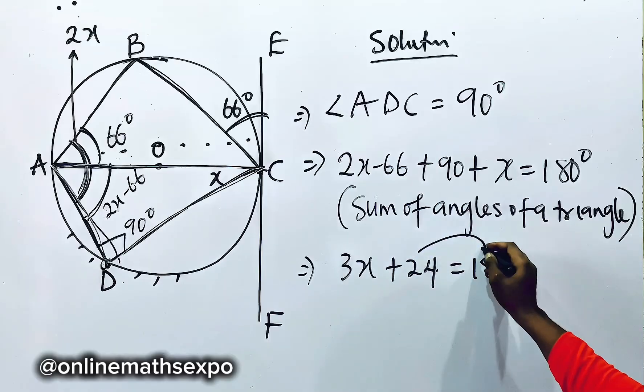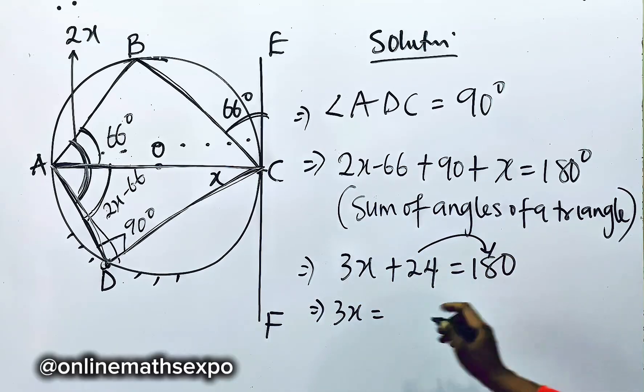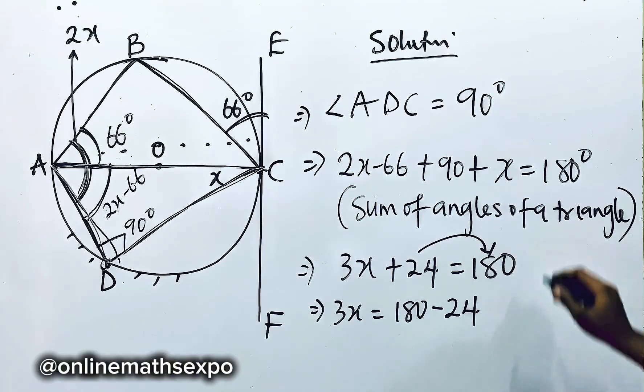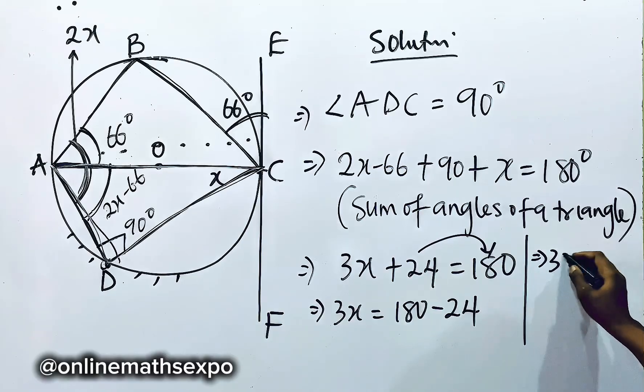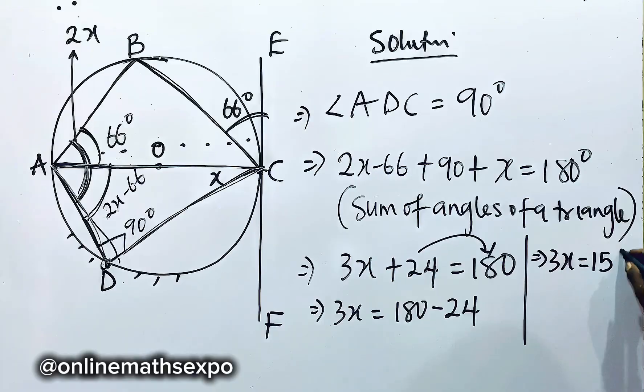So we now have 3X is equal to 180. So we simplify. Let's work it out here. So we have 3X is equal to subtract this. It gives us 156.